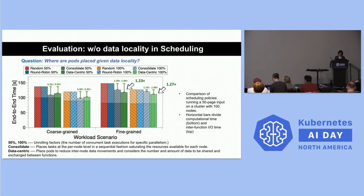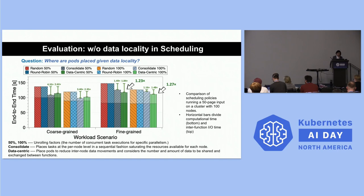This experiment shows the end-to-end processing time of the whole workflow. For the coarse-grained benchmark, consolidating all pods using data on the same node can give up to a 4x improvement. Developing data-centric solutions — placing pods to reduce inter-node data movement — also provides around 3 to 4 times improvement.